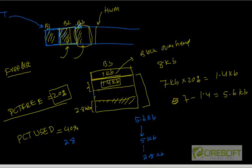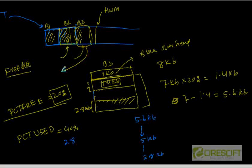That means when we delete, Oracle will figure out what is the PCT-used parameter for that block. If the PCT-used parameter for that block is 40 percent, as we delete, we will generate more free space or less used space. When the used space is going to drop below 2.8 kilobytes, this block is going to come onto the free list. That means next time I am going to do an insert, I can use this block for insertion.